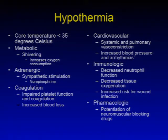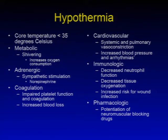Hypothermia is when core temperature is less than 35 degrees Celsius. Metabolic effects of hypothermia include shivering, which increases oxygen consumption — both myocardial oxygen consumption and oxygen consumption within the musculature. Adrenergic effects include sympathetic stimulation such as release of norepinephrine. Coagulation is also affected by hypothermia in that there is impaired platelet function and coagulation, which may lead to increased blood loss.